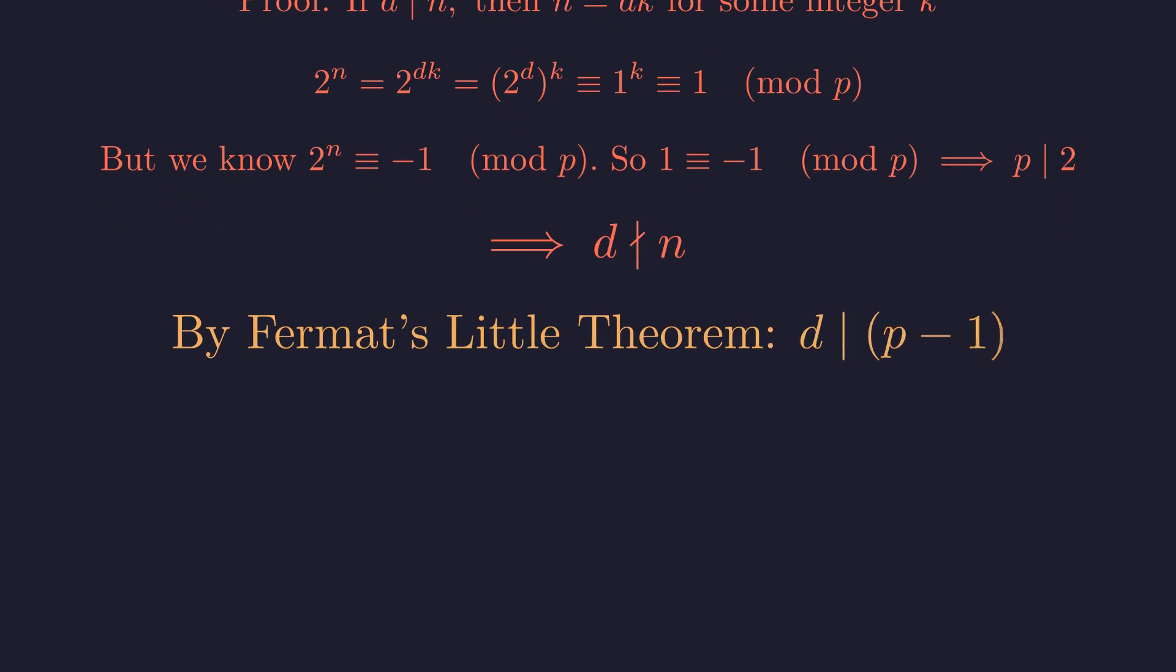Now we invoke Fermat's little theorem. Since p is prime and doesn't divide 2, the order d must divide p minus 1.